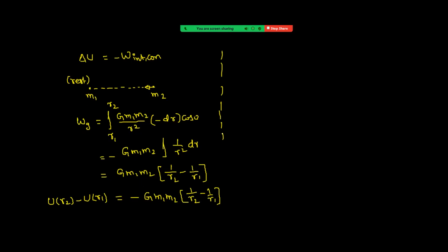So we got the change in potential energy. The right side is a constant because R1 is known, R2 is known, M1, M2, and G — all values are known. That means U(R2) minus U(R1), this value is known. But if you want to know one of these two values, we have to fix the other value. We can take infinitely many values, so we have to fix one — and this is completely our choice.